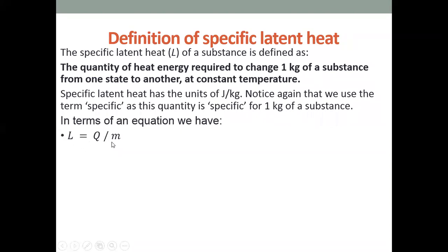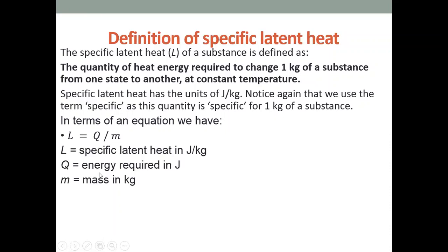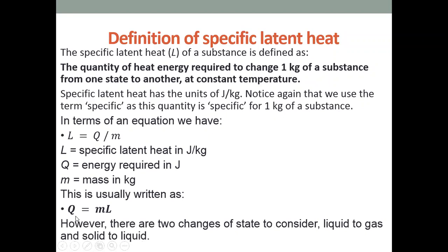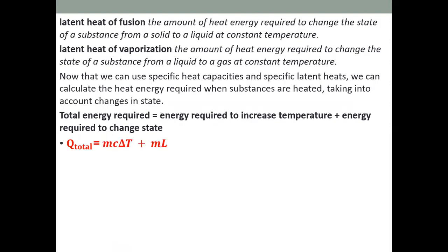The equation for specific latent heat is: L = energy / mass. To find energy using specific latent heat: energy = mass × specific latent heat (q = mL). This gives the energy required to change the state of a substance.